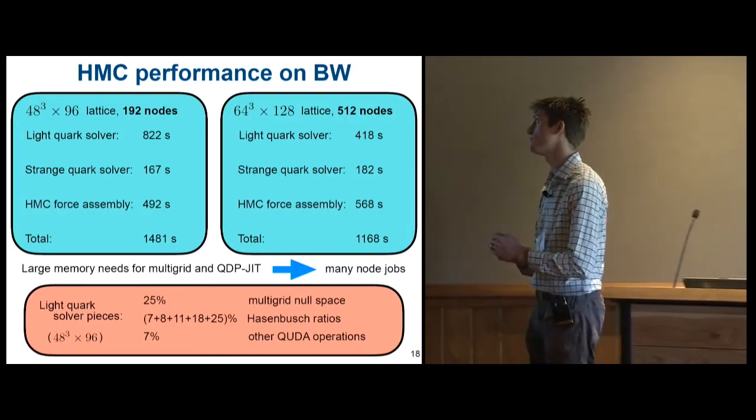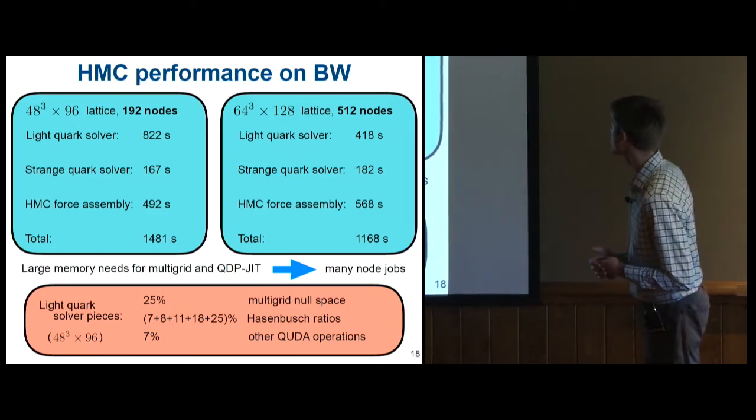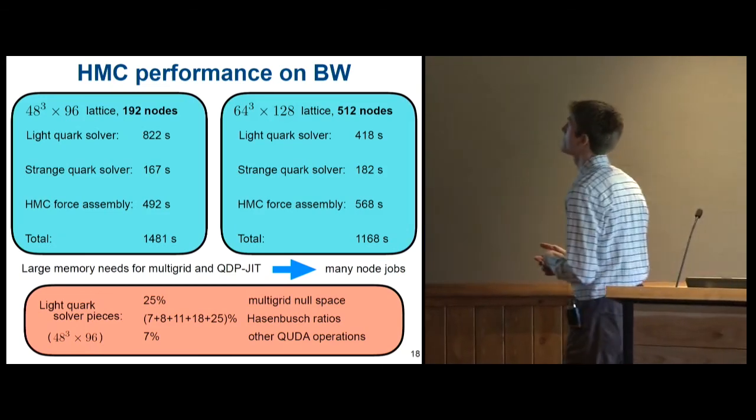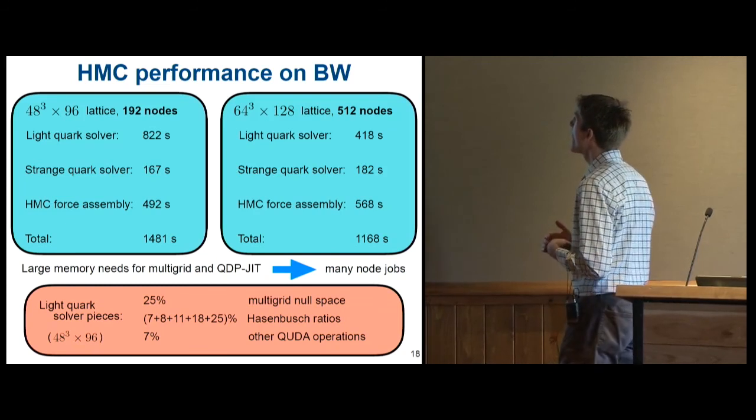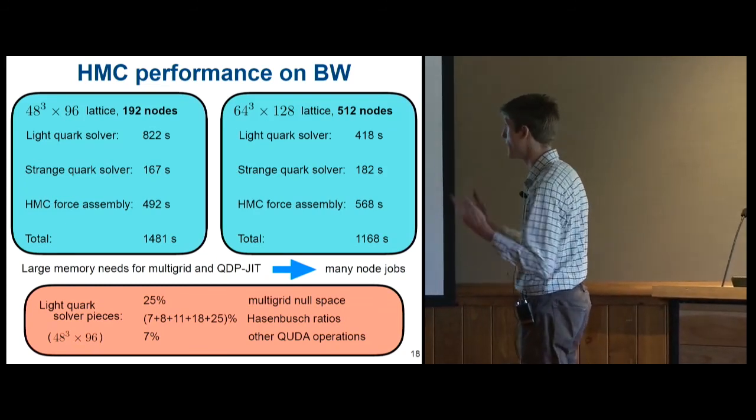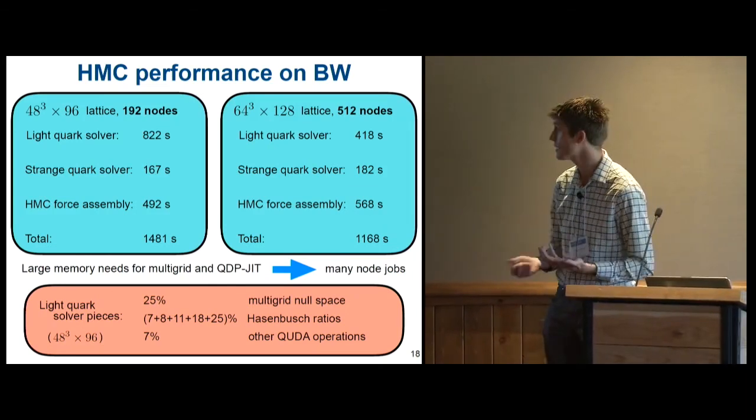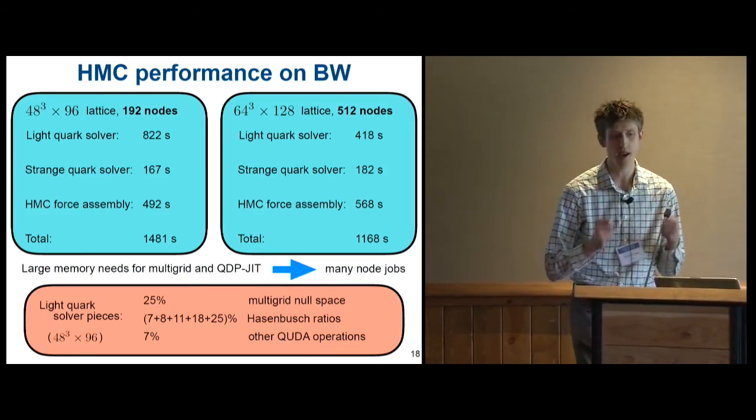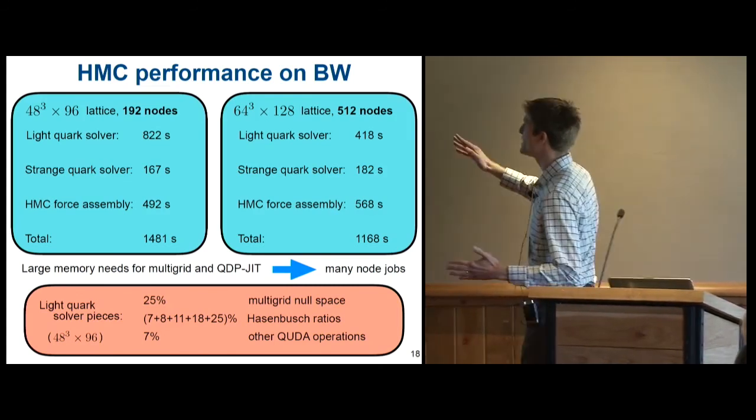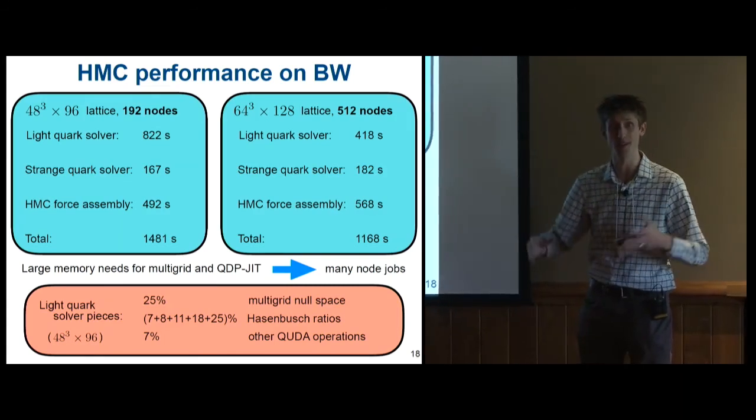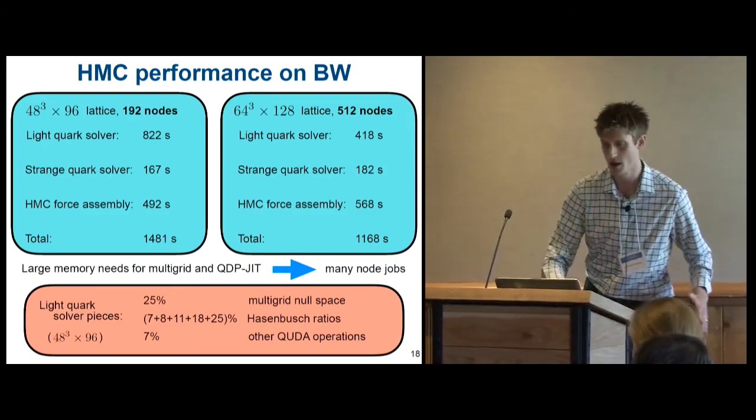So how are we actually doing on Blue Waters then? Well, the lattices that we're trying to create are pretty large, 48 cubed by 96, so the big one 64 cubed by 128. The smaller lattice fits well on 192 nodes, any smaller, and you're starting to get memory bottlenecks. And it's pretty much dominated by the light quark solver, which itself I have split into sections at the bottom. Setting up this multigrid thing accounts for a quarter of the time, and then the rest of it is splitting up these different ratios of determinants. And as we go to bigger lattices, the really cool thing here is that the light quark solver becomes a smaller fraction of the total cost on larger lattices. And without multigrid, that would be an order of magnitude the other direction.